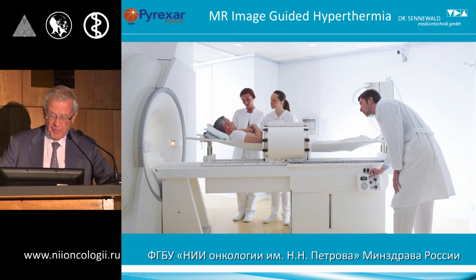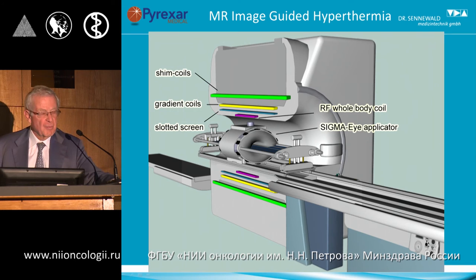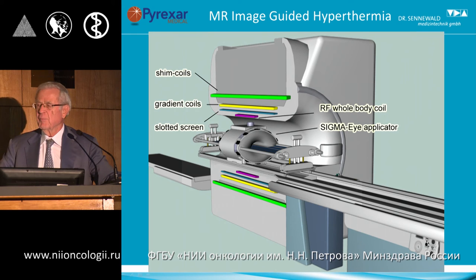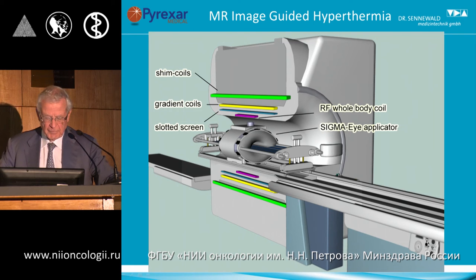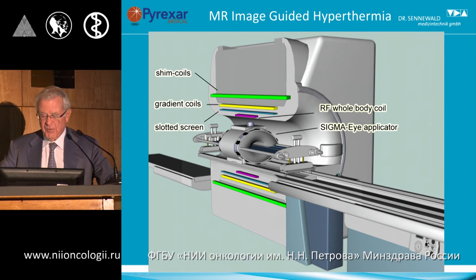This is a similar presentation from another perspective, graciously made available by Peter Wust from Charité University Hospital, who deserves all the merits — supported by a Special Research Grant from the German Federal Research Council — for having developed this prototype system, which has since been manufactured by us under license. You can clearly see the standard MR components: the gradient coil and shim coils, and how the applicator fits nicely inside the magnet tunnel.